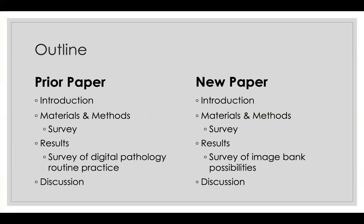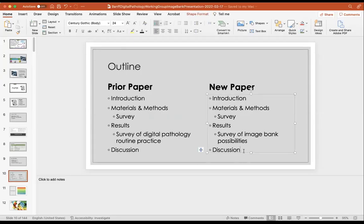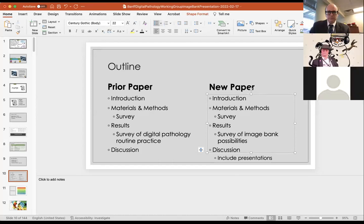The paper needs to flow in an interesting way. Putting a lot of the people's presentations in the discussion makes sense as a way to make it more focused and targeted, rather than trying to fit every presentation into the introduction. It also gives an opportunity to refer to things twice — mentioning image banks we're directly associated with briefly, then giving details later.